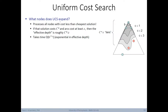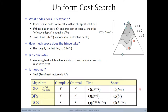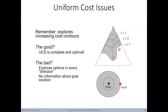UCS processes all nodes with costs less than the cheapest solution. It's both complete and optimal, but the downside is that it explores in every direction of the tree with no information about the goal's location. All we have are cost transitions from one state to the next — no guiding heuristic to navigate more efficiently through the search space. This motivates heuristic search methods covered in the next sections.